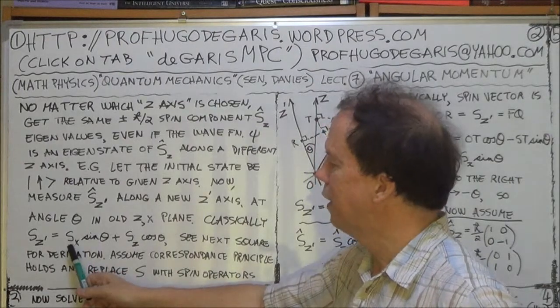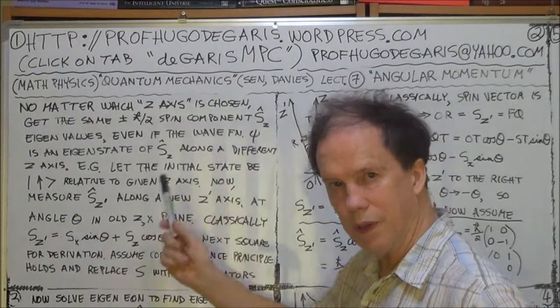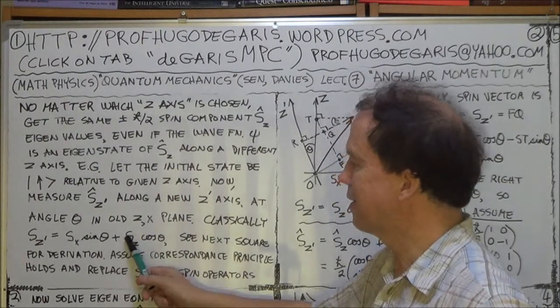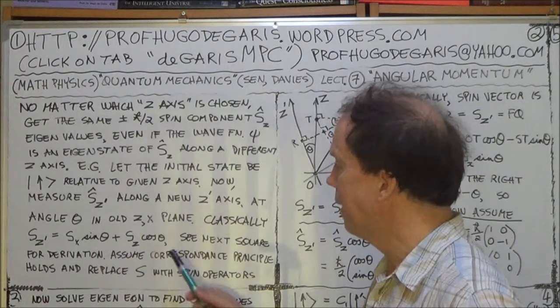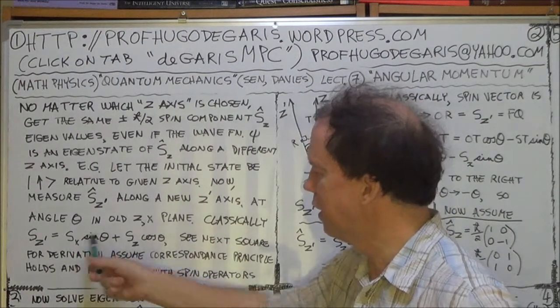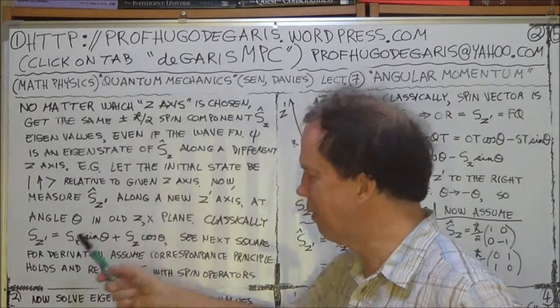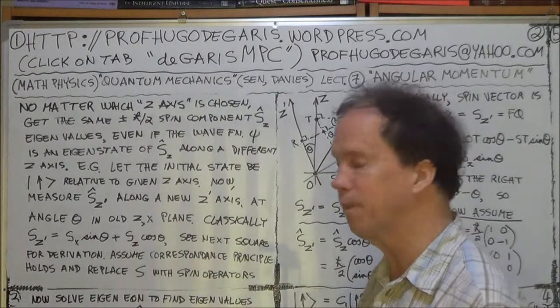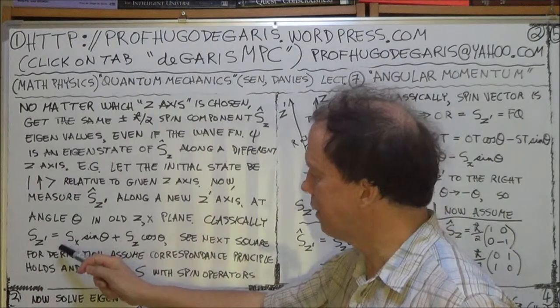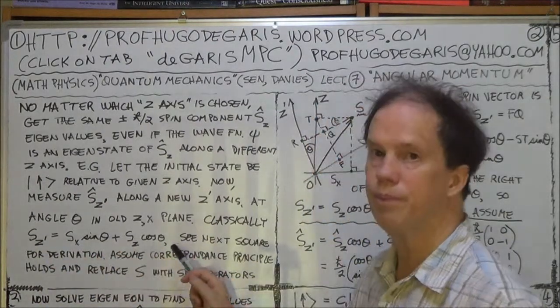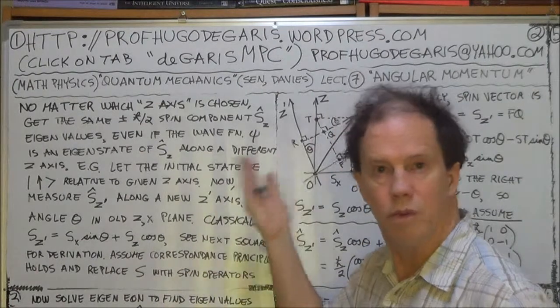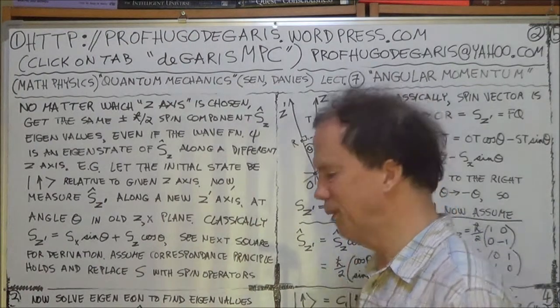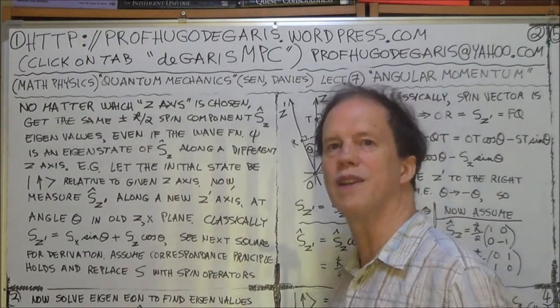And then we use the correspondence principle and we change this a little in making these now operators. So we put a hat over these three terms and now we know what the two by two matrix operator is for Sx, we have a formula for that, we've done that in earlier sessions. We know similarly for the z component Sz hat, we know it's a two by two matrix as well. So we can plug those two matrices in here and here and get the matrix that corresponds to this operator Sz dashed hat. Follow that logic? So what I'll do now is actually derive this, where does this come from, because it's critical for all that follows, especially this theta over two weirdness that I hope I've whetted your appetite with.